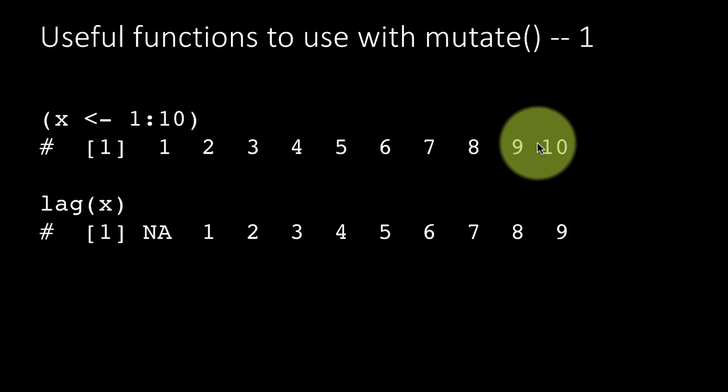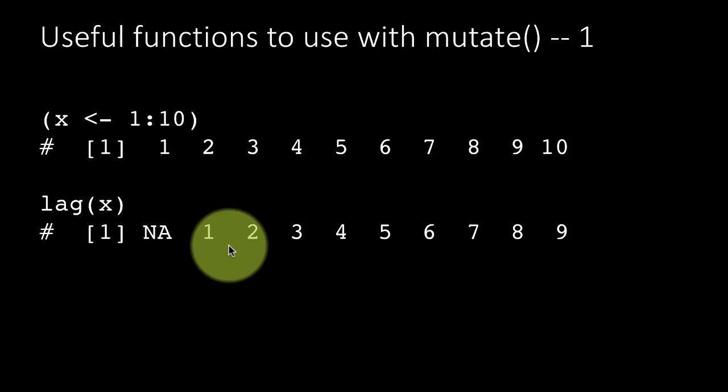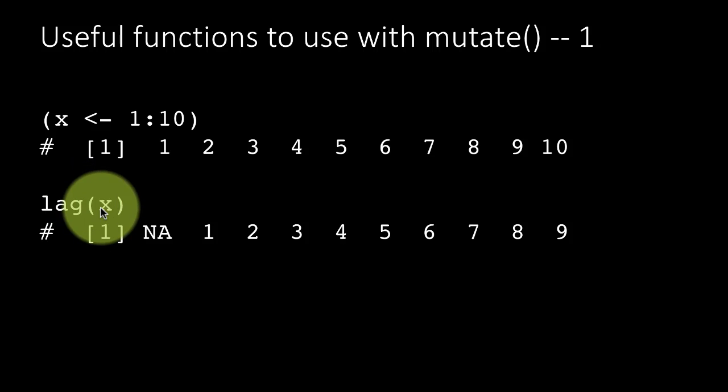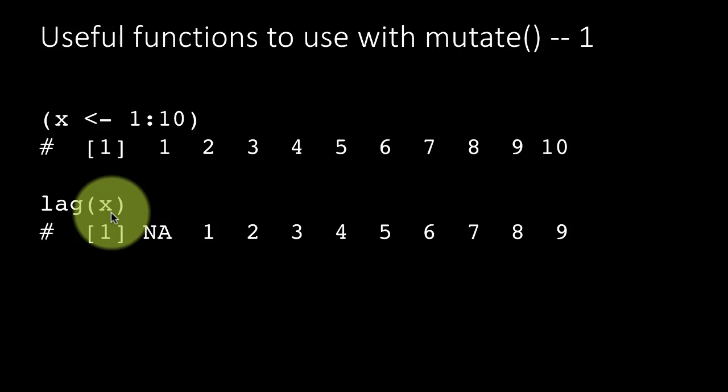This is particularly useful in the context of time series. If this were a time series, then lag of x is the same time period. So by default, the lag function lags by one time period. But if you want larger lags, you can specify that as the next argument. So you say lag x comma 3, then you'll get the same time series lagged by 3. That's all.